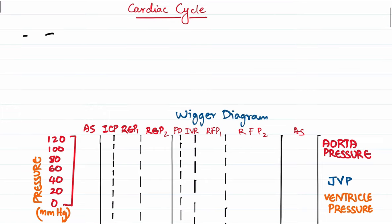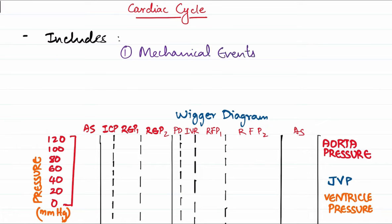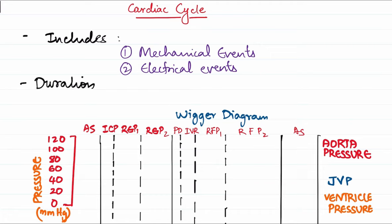A cardiac cycle includes two things: the mechanical events, which include atrial and ventricular pressure changes as well as pressure changes in the blood vessels, and the electrical changes happening in the heart, which we understand from the ECG.